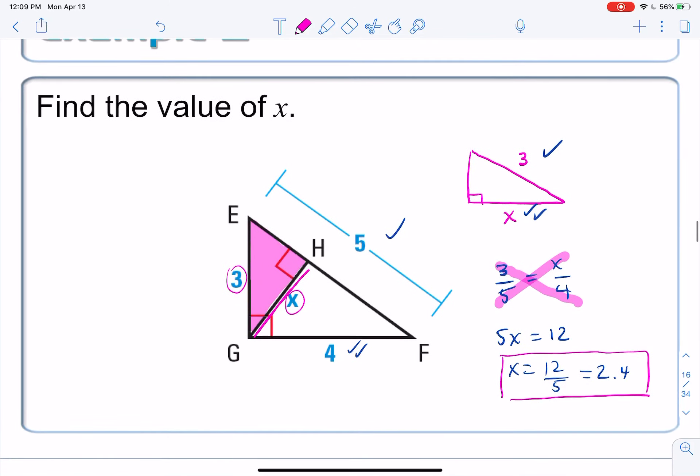So there's basically an example of using this right triangle similarity theorem that we just came up with in order to solve for the length of the altitude. But there's more. Tune in to the next couple of videos to see how we apply this thing that we're going to call the geometric mean.